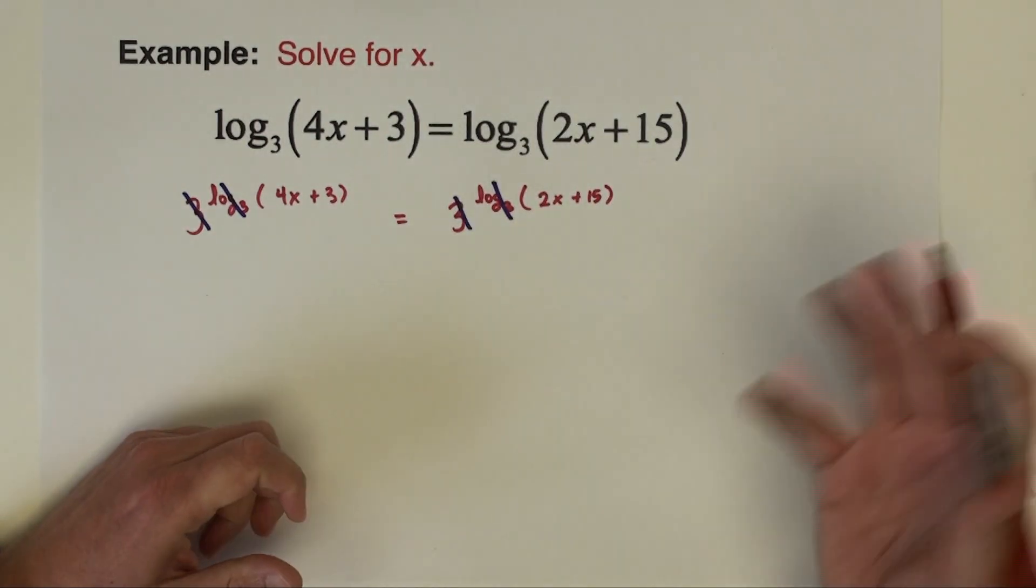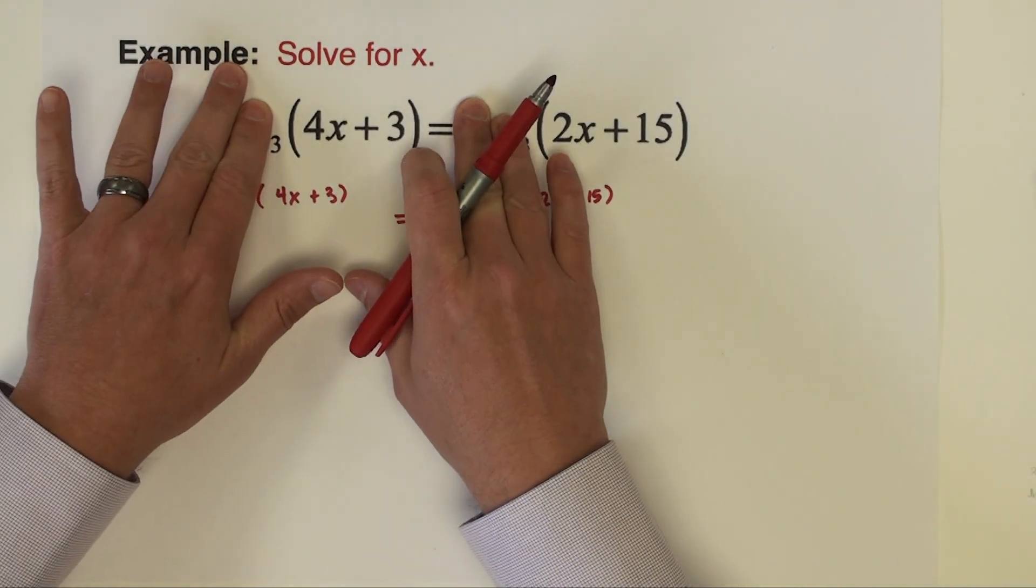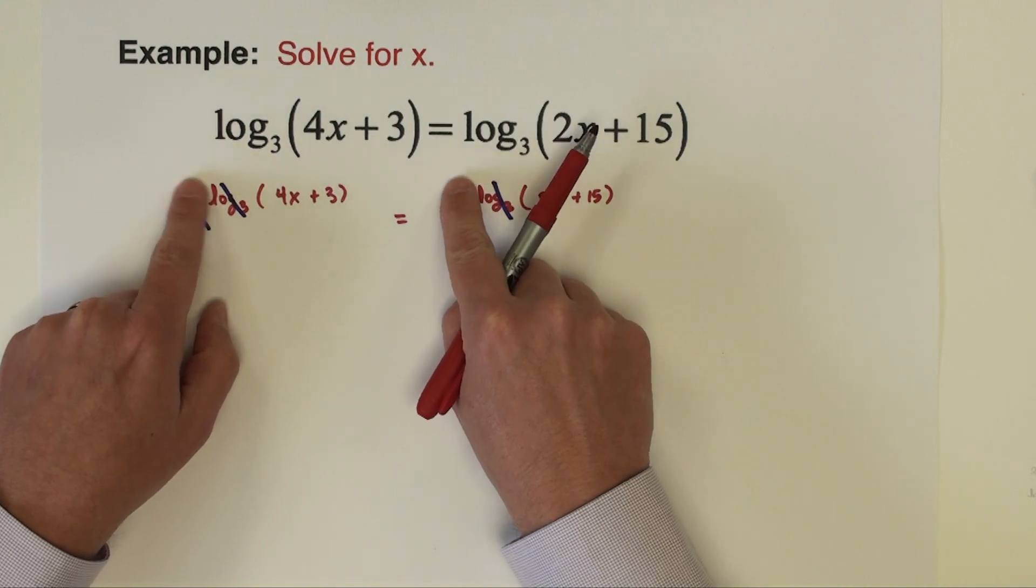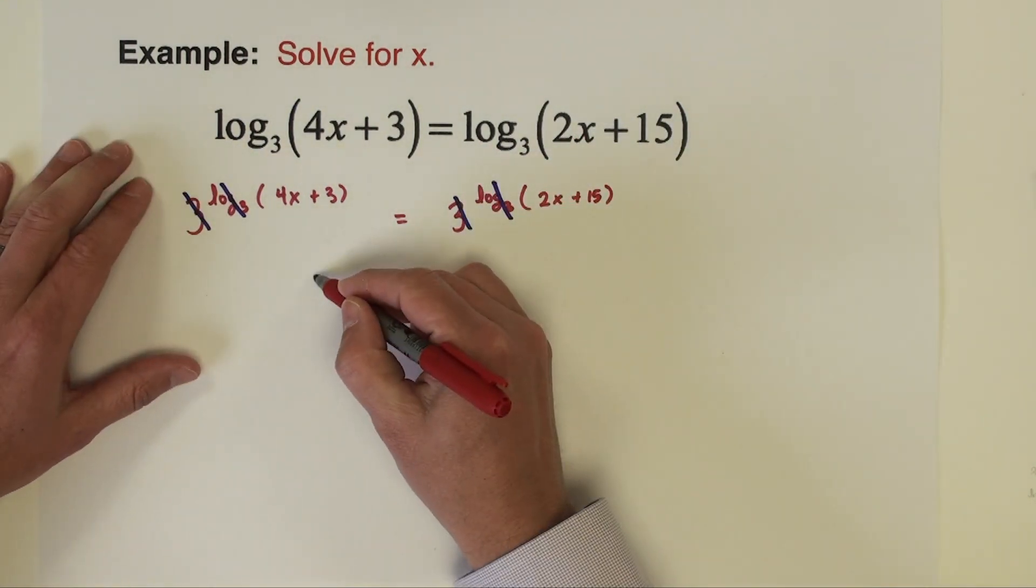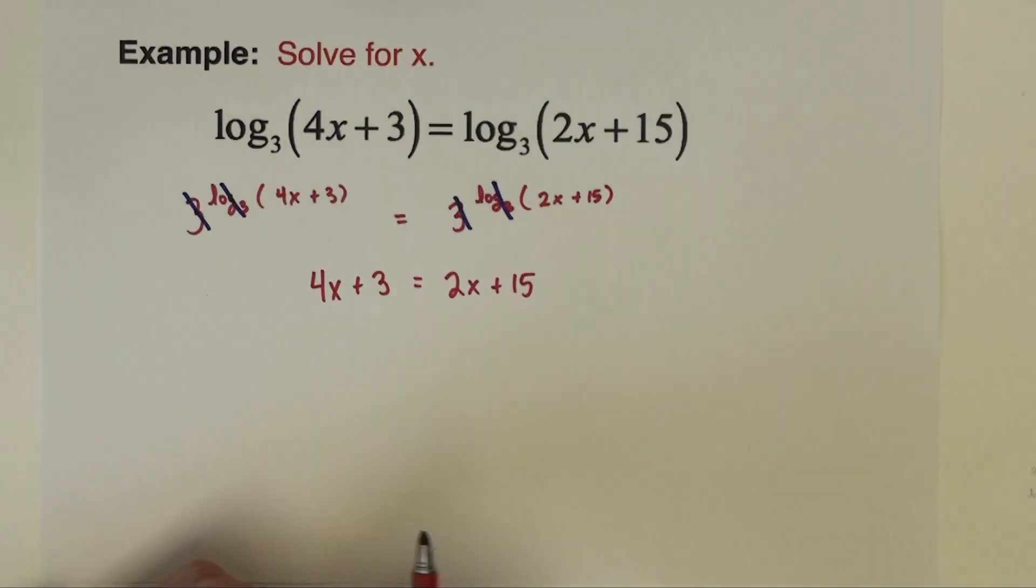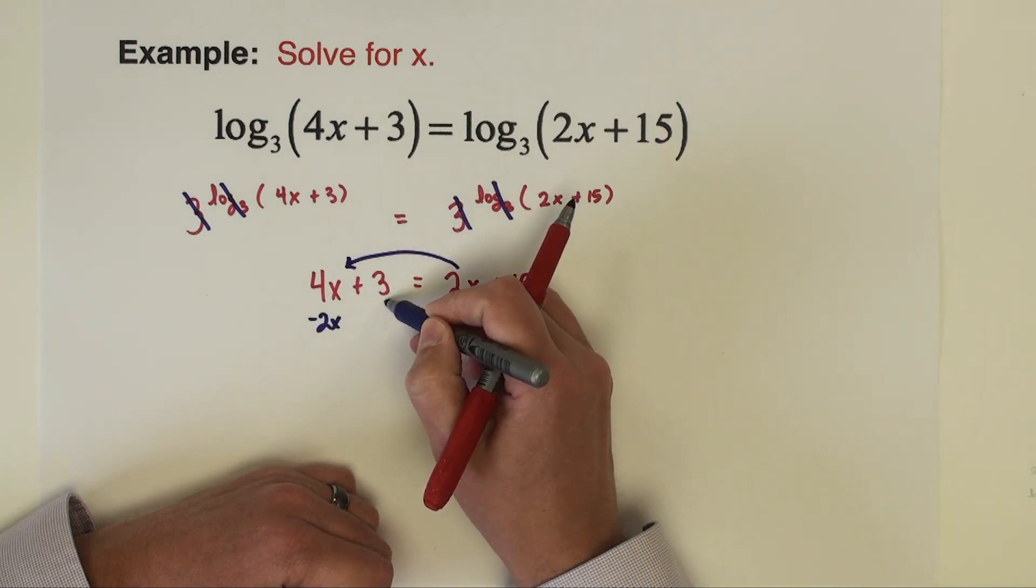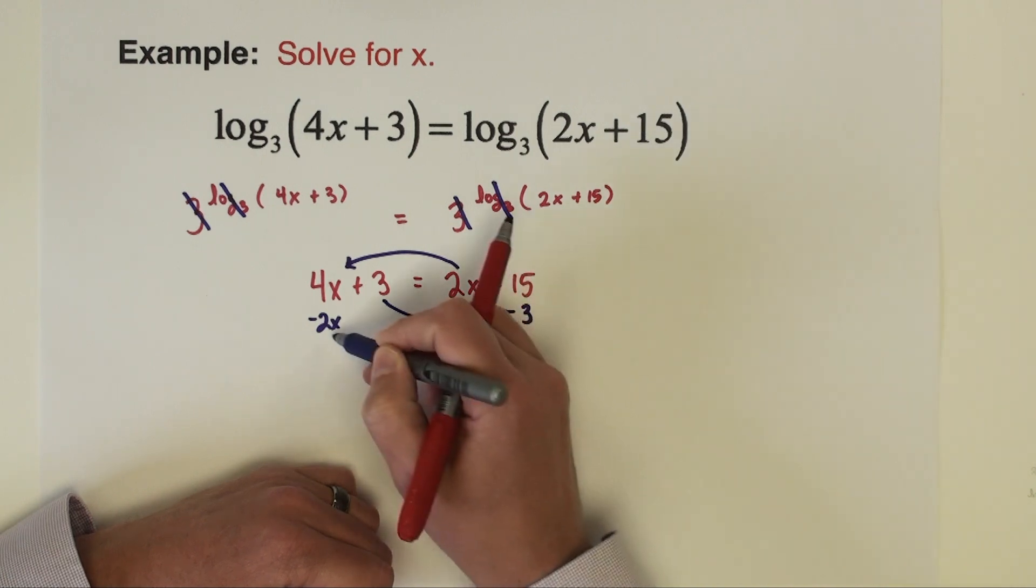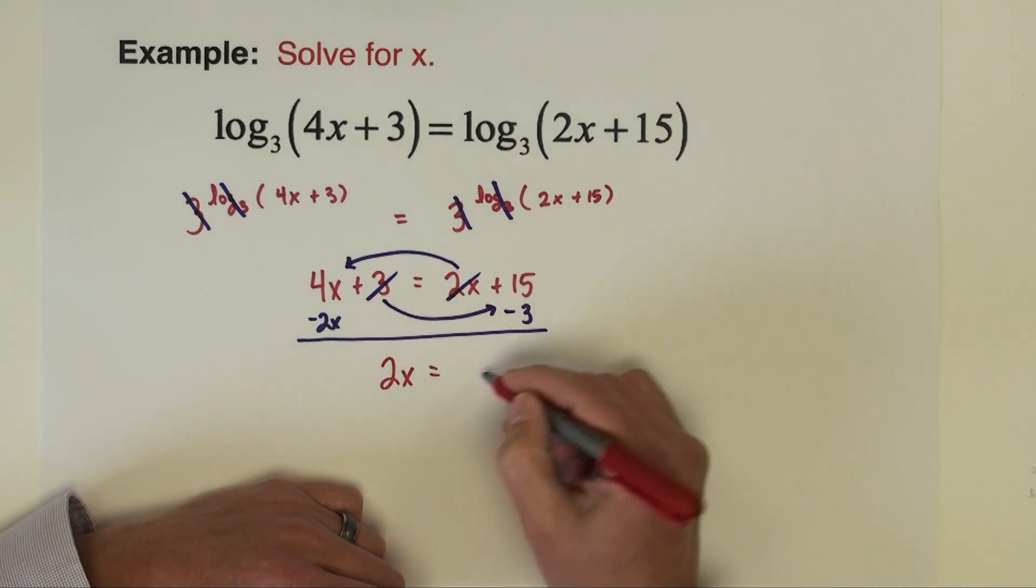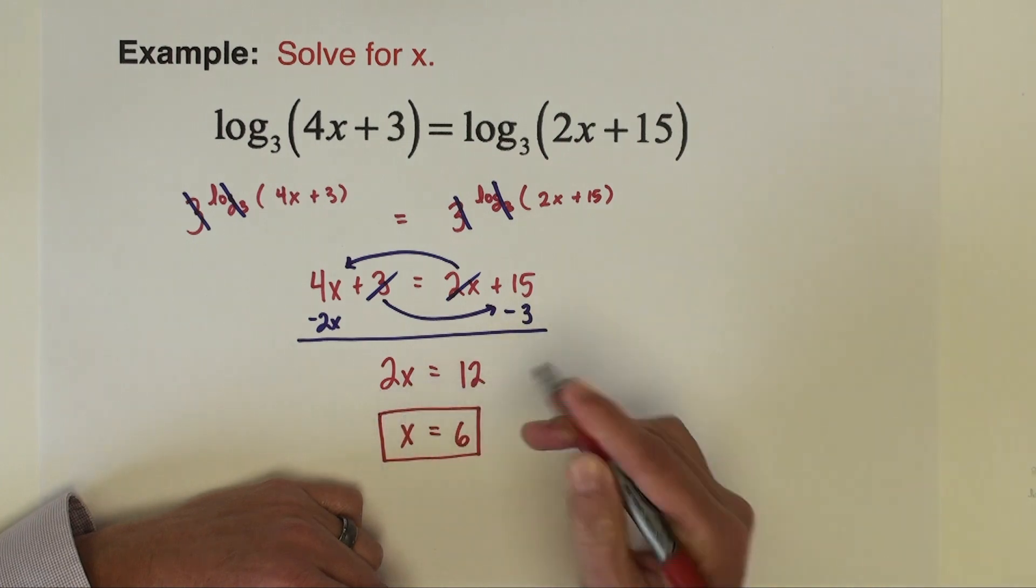All that's left is the stuff that was inside the logarithms to begin with. So we now have 4x plus 3 equals 2x plus 15. Standard multi-step linear equation from here. I'm going to take this 2x and subtract it to the left side, and take the positive 3 and subtract it to the right side. That gives us 2x equals 12, so x equals 6. That concludes the problem.